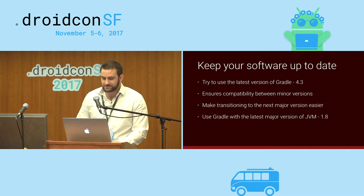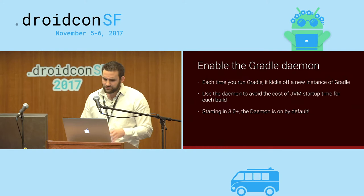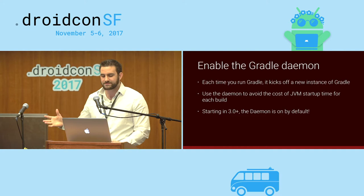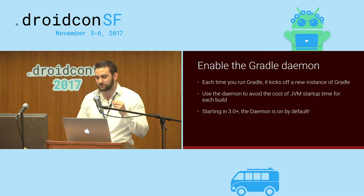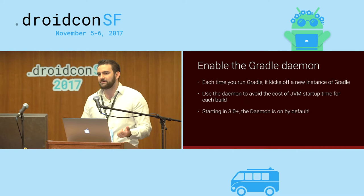Starting from the bottom up, let's focus on Gradle properties — these are the easy ones. The Gradle daemon: if you're still using 2.14, you have to manually turn it on. Starting with 3.0+, the daemon is on by default. For CIs you probably don't want this, but for local builds you definitely do. This cuts back on JVM startup time.